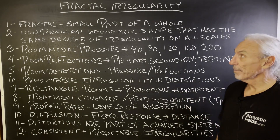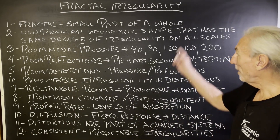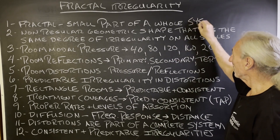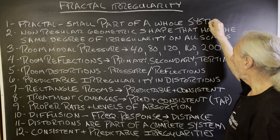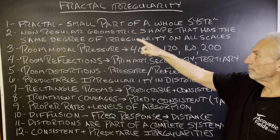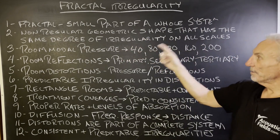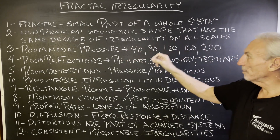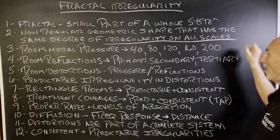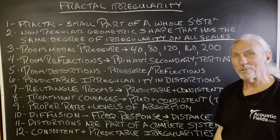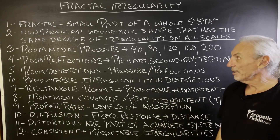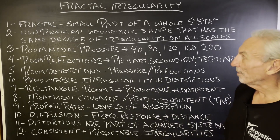So what's a fractal? It's a small part of a whole system. The definition: non-regular geometric shapes that have the same degree of irregularity on all scales. Those are the key words right there — irregularity on all scales.